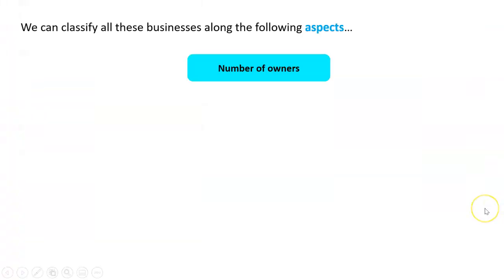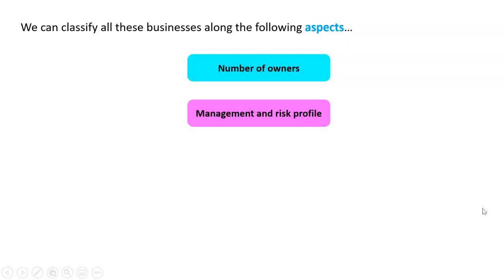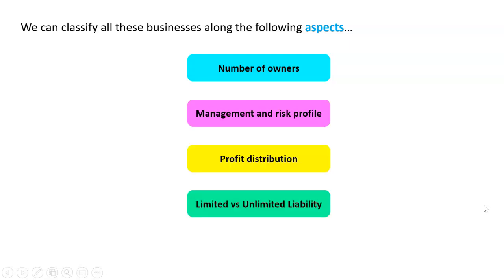We can look at the differences in terms of: the number of owners, the management and risk profile, profit distribution, limited versus unlimited liability, and whether the business has perpetuity. We'll quickly go through each of these.